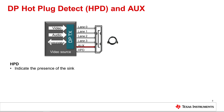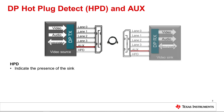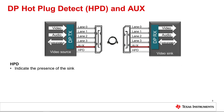HPD serves two purposes critical for startup of the DisplayPort communication link between source transmitter and sink receiver. First, HPD serves as a sink presence and absence notification. When HPD is high, or 3.3 volts, this indicates the presence of a sink. When HPD is low, or zero for greater than 2 milliseconds, this indicates the absence or the removal of the sink. Second, HPD serves as an interrupt from the sink to the source. When HPD is low, or zero between 0.5 to 1 milliseconds, this indicates an interrupt event.